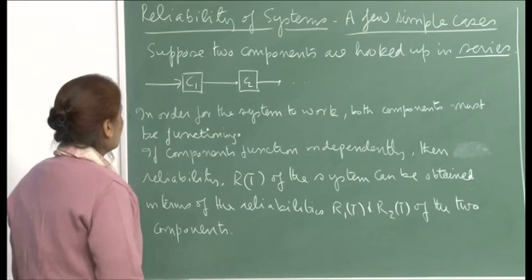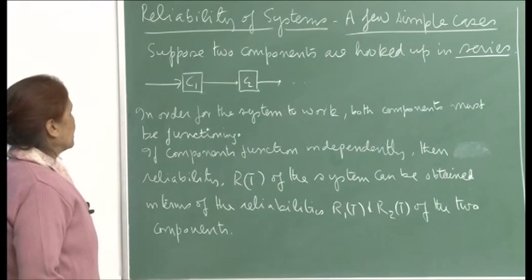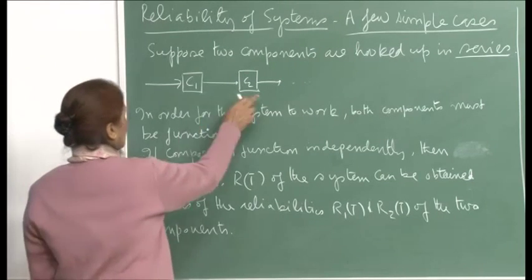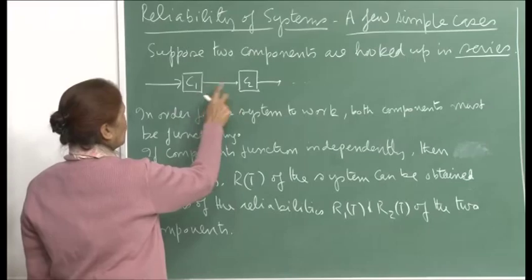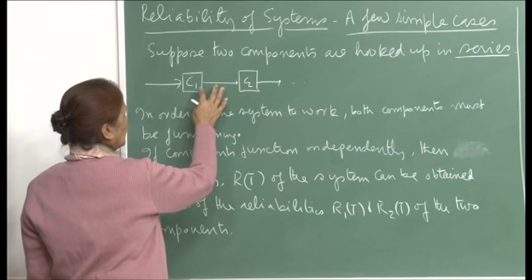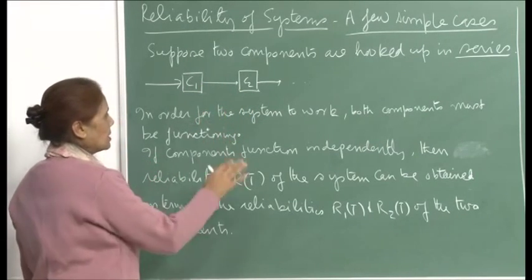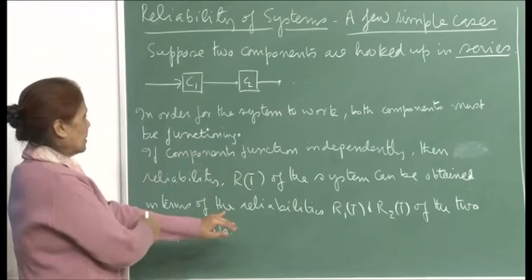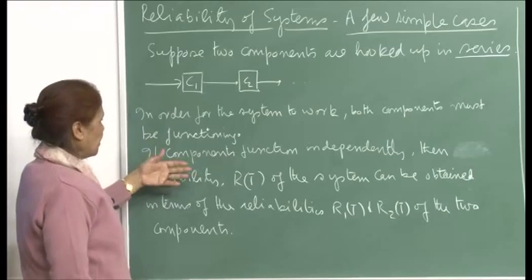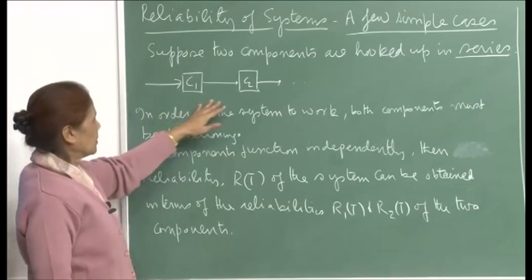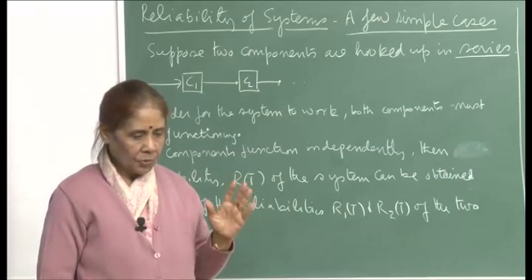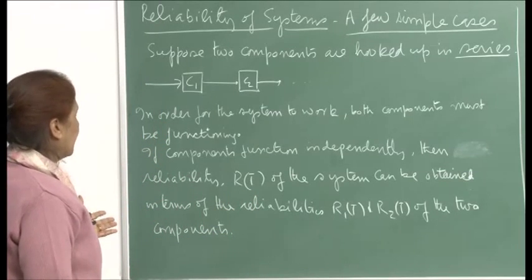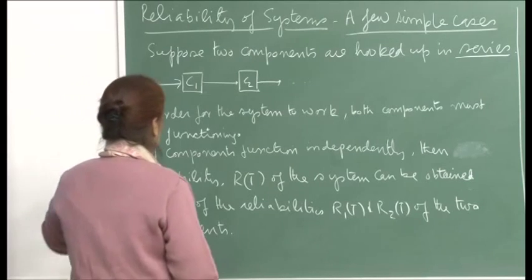Beginning with the simple case: two components hooked up in series, c1 and c2. They are in series, so in order for the system to work, both components must be functioning. They may be performing different tasks for the whole device, and so they both have to function. If any one of them fails, then the system will fail.